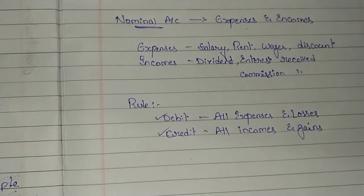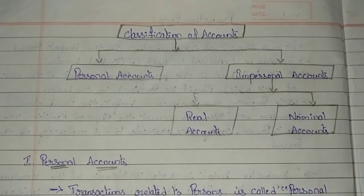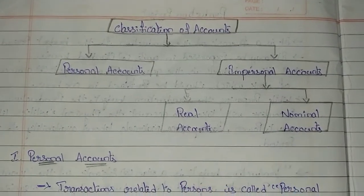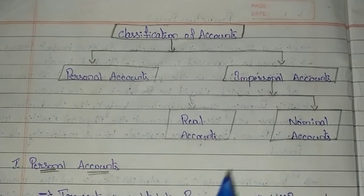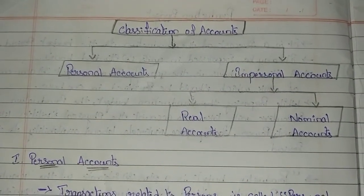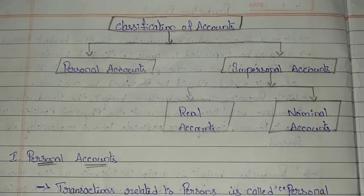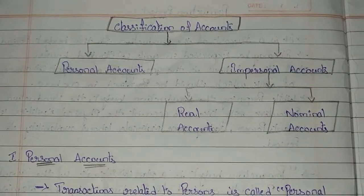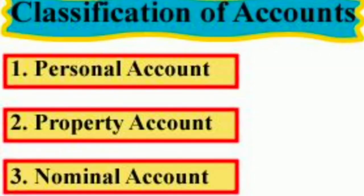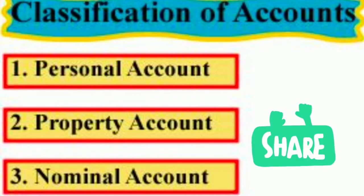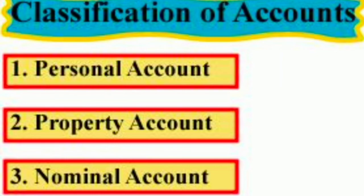These are the three classifications of accounts. Whenever you are having transactions, you should first identify under which account the transaction comes — whether personal, real, or nominal. Once the identification has been done, according to the rule of that particular account, you should go for making the debit and credit entries. This is all about the classification of accounts. Please like, share, and subscribe to the channel for more accounting concepts.